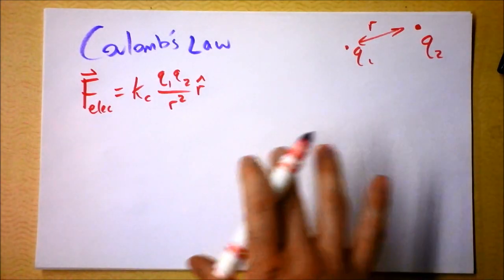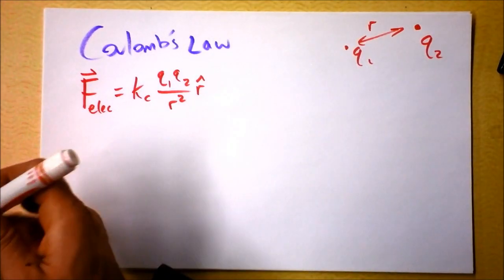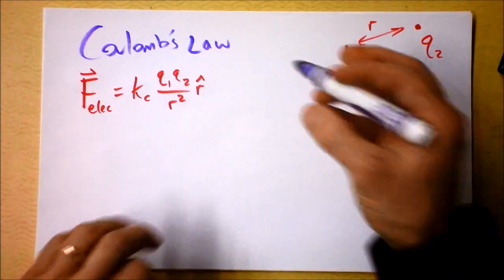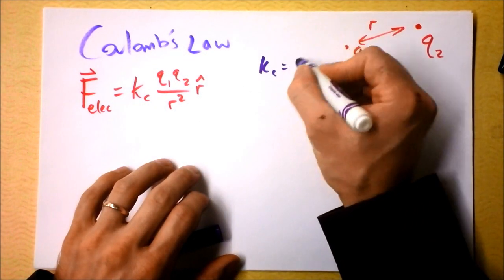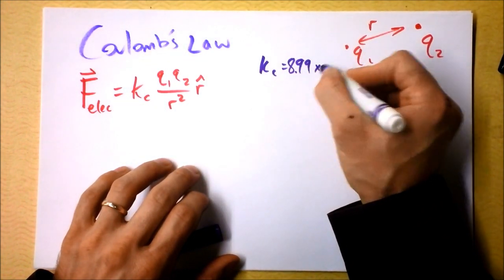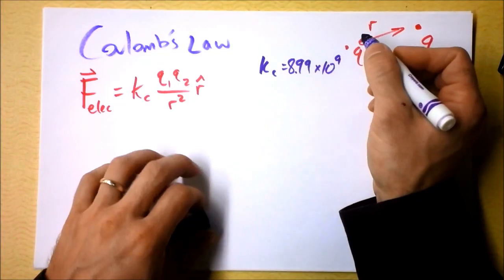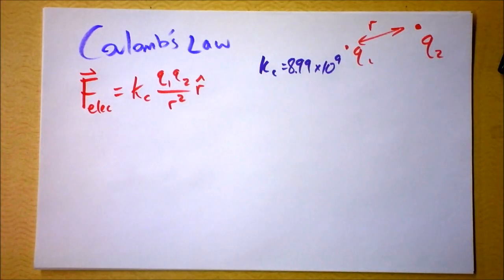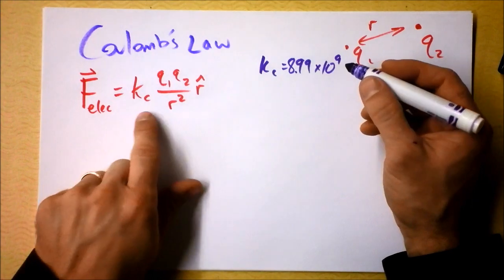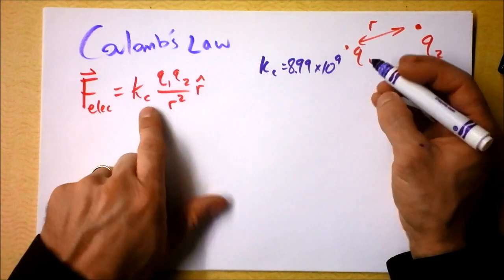But Coulomb's Law is amazingly big. It's an amazingly big force because Kc is 8.99 times 10 to the 9th. Wow, that's a really big number, and I guess it's got some units that give it force out of all this stuff.